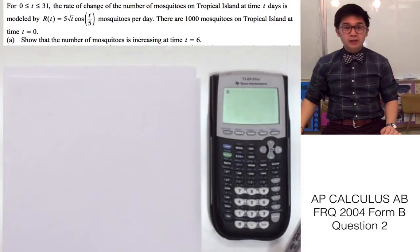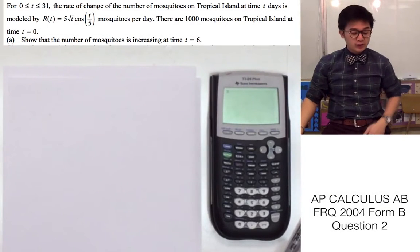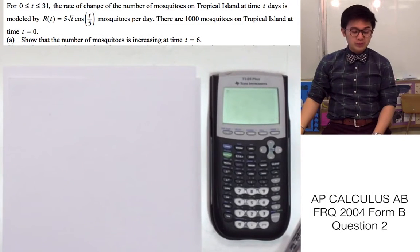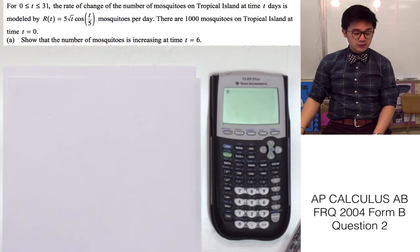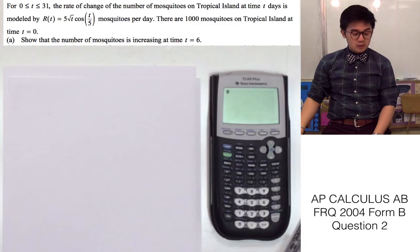For today, we're going to be answering an FRQ from 2004, Form B, question number 2. In this problem, we are given the rate of change of the number of mosquitoes on a tropical island at time t, modeled by r of t, which is equal to 5 times the square root of t times cosine of t over 5.